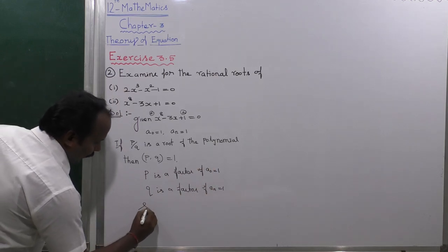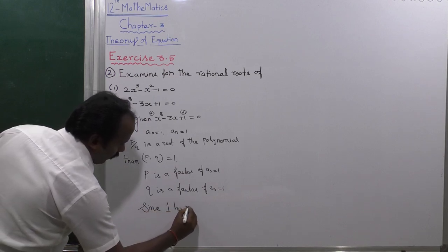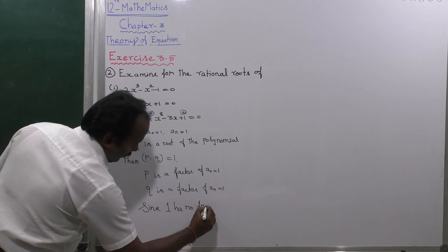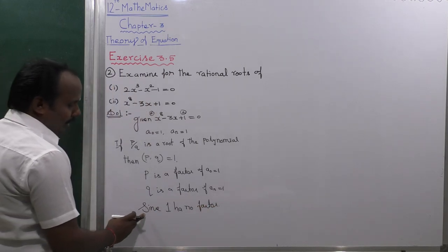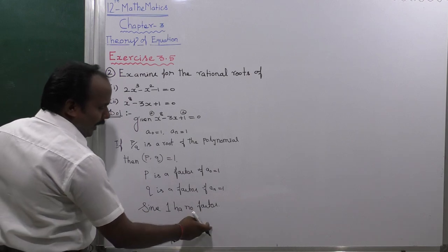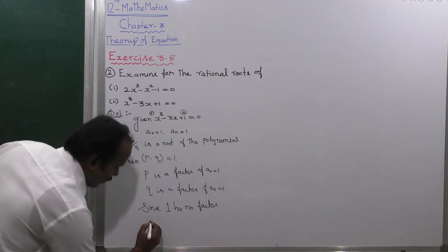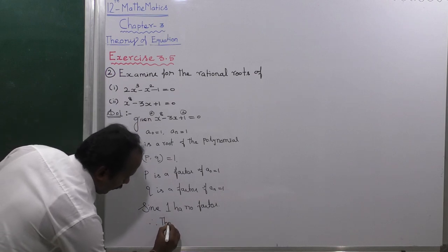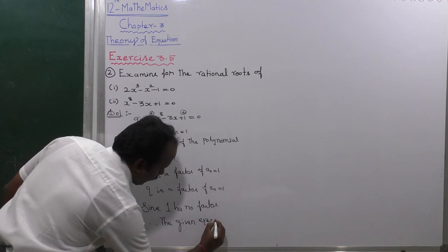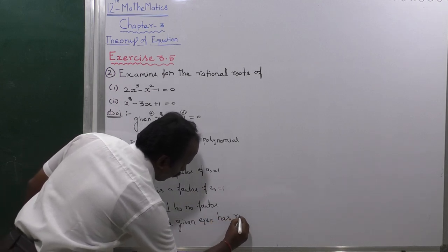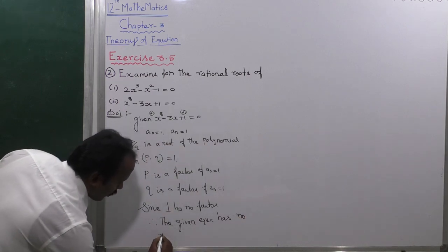Since 1 has no factor — this is a very important point — 1 has no factor. So this is not a factor. Therefore, the given equation has no rational roots.